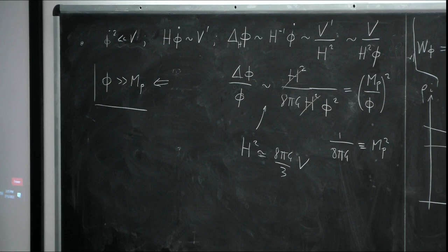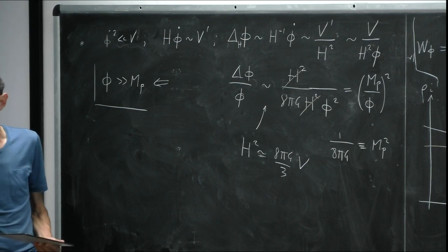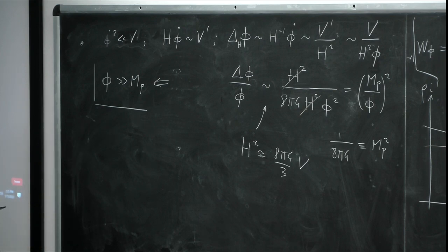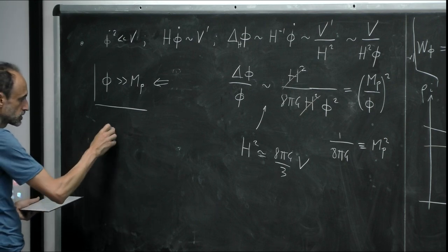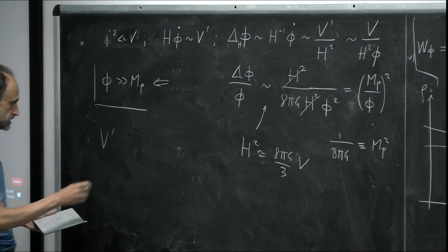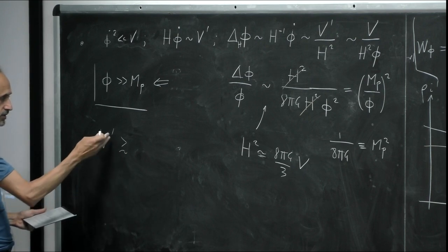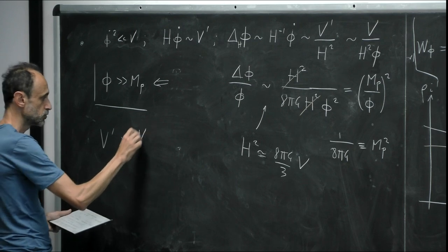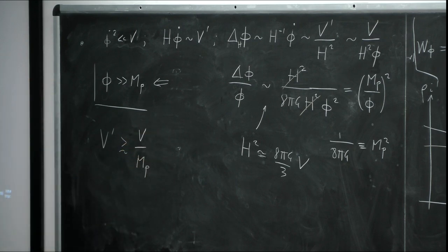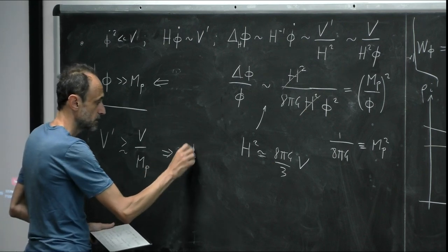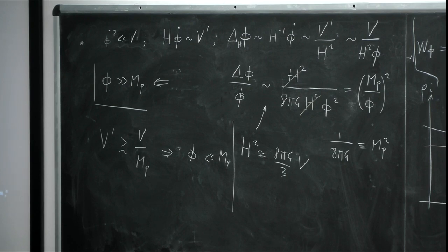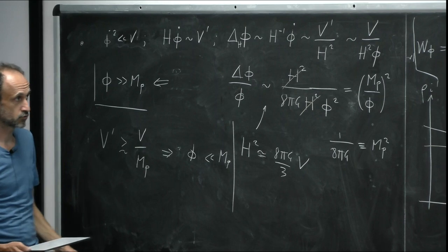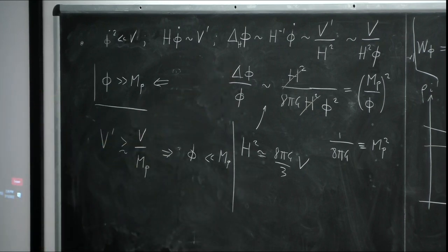This is related to the swampland conjecture, which has become fashionable in recent years. The first conjecture applied to quintessence says that the first derivative of the potential should satisfy V′ ≥ V/M_Planck, which is exactly the opposite of what I need — it implies φ should be smaller than the Planck mass. Note that Vafa gave a lecture about the swampland earlier this week.